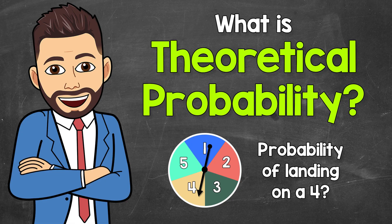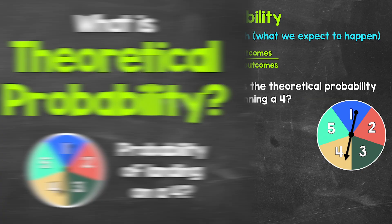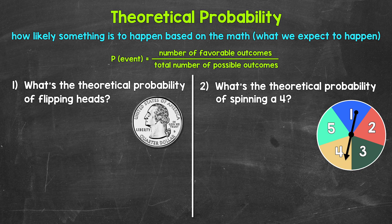Welcome to Math with Mr. J. In this video, I'm going to cover what theoretical probability is. Probability tells us how likely something is to happen — in other words, the chance of something happening. Theoretical probability tells us how likely something is to happen based on the math.